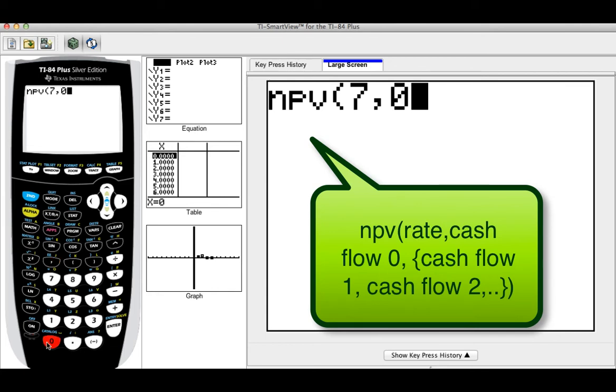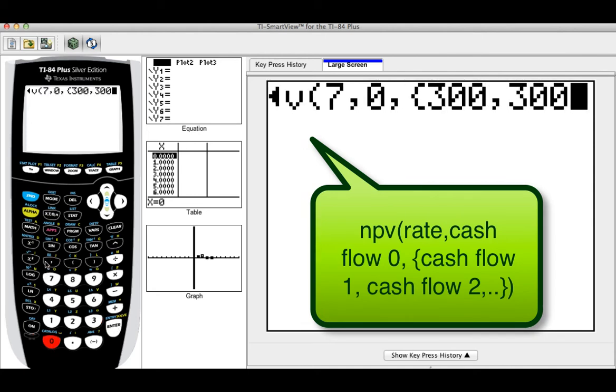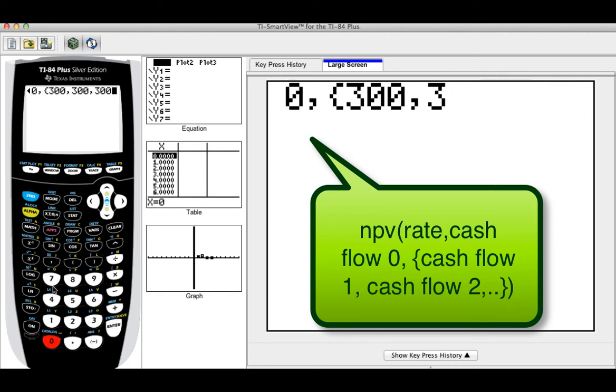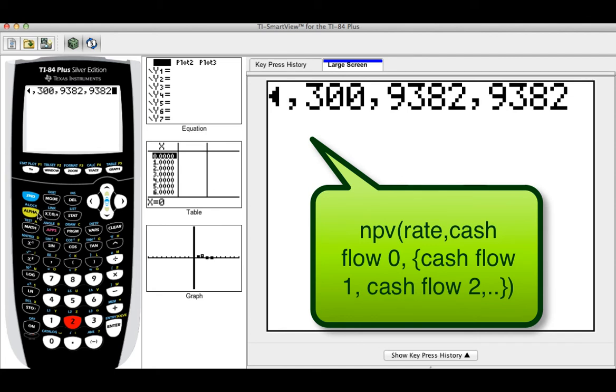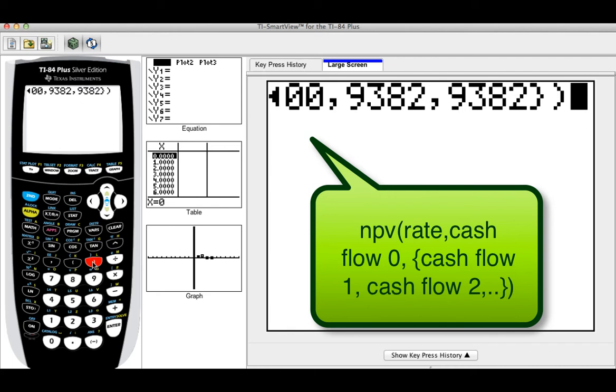Well, in this case, it's just zero. Then put another comma. Then you need to put brackets, which you do by doing second and then brackets, as you can see in the calculator. And then we're going to do 300 comma 300 and then comma 300 again, comma 9,382 comma 9,382. And then you need to close your brackets and then your parentheses. If not, the calculator is going to give you a mistake. Bingo.